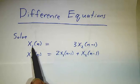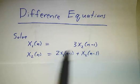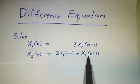So in this example, we'll say that x1 today is 3 times x2 yesterday, and x2 today is twice x1 yesterday plus x2 yesterday.